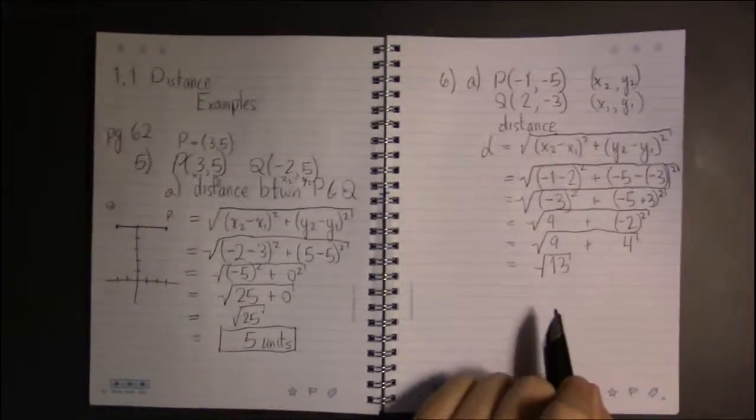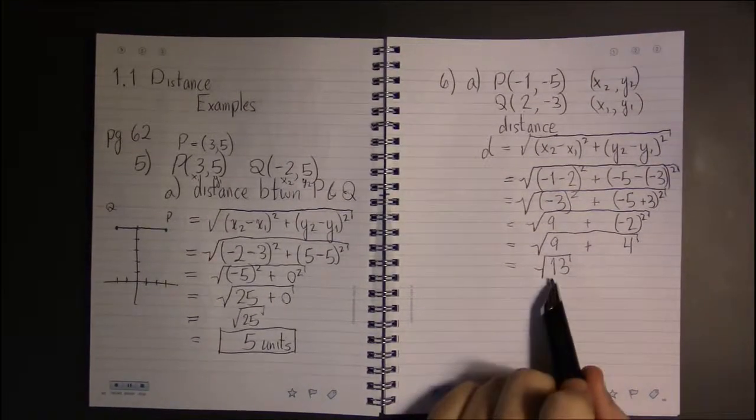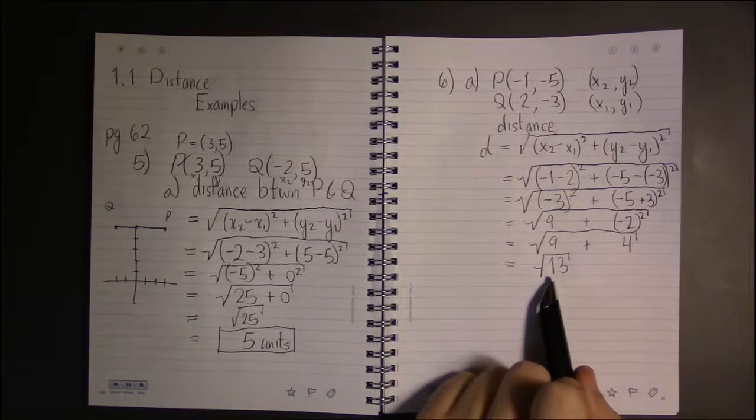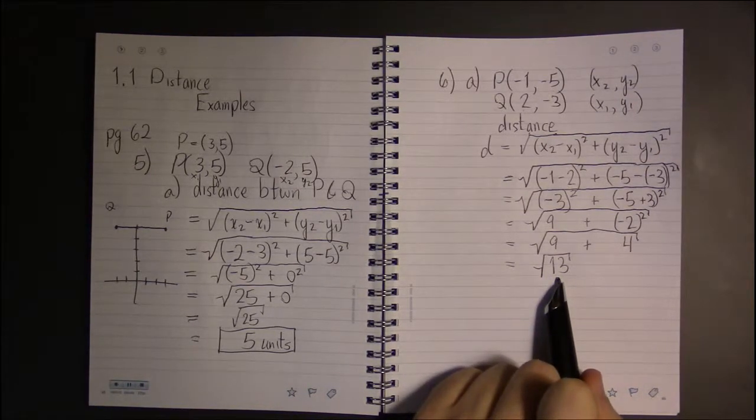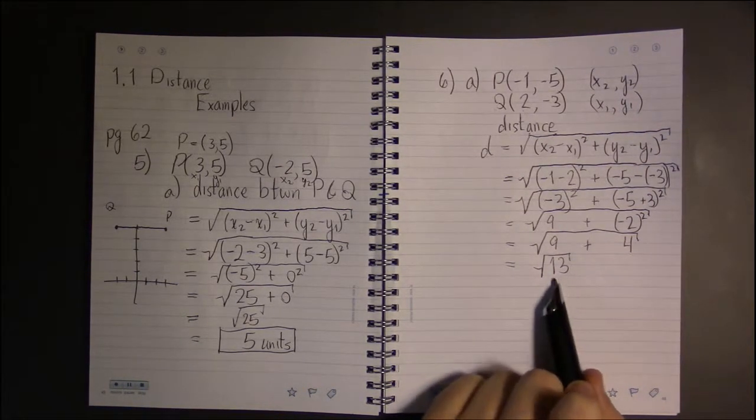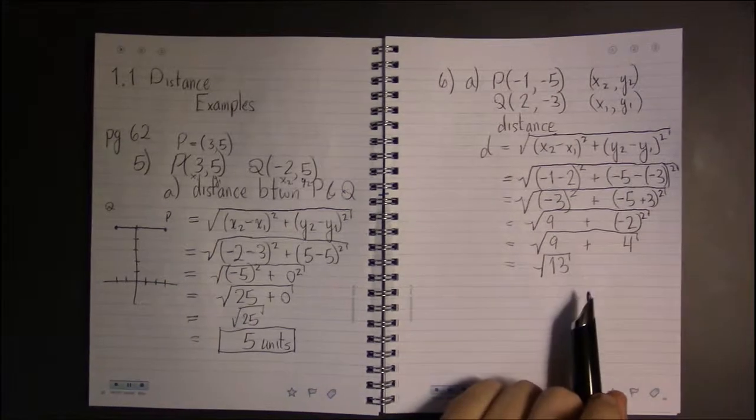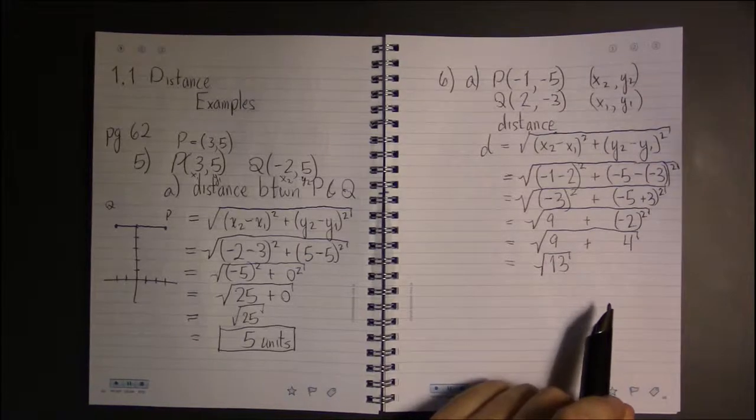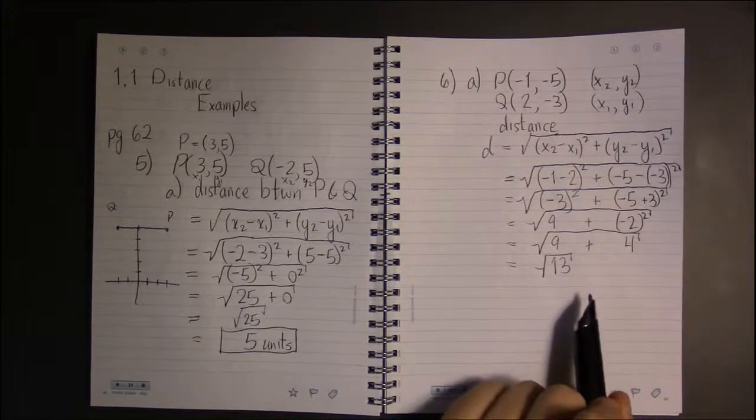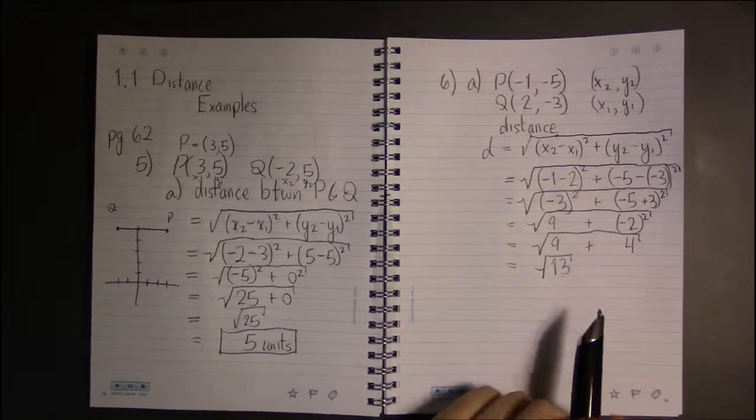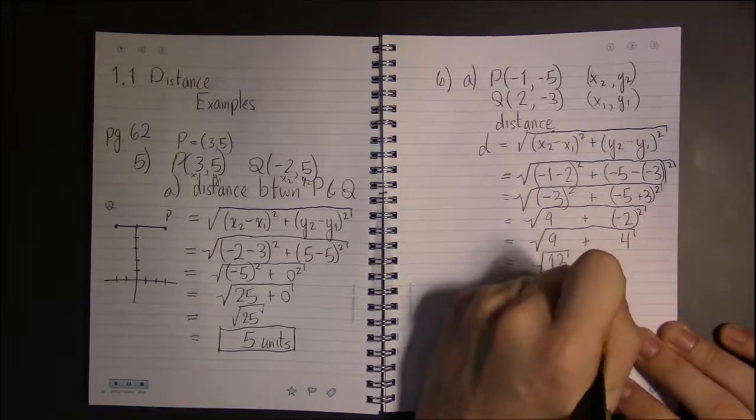If we think, is there a nice perfect square that goes into 13 if we can try to simplify this any further? The only thing that goes nicely into 13 is simply one and 13, so it's prime. There are no perfect squares that divide into 13, so if you want you can leave your answer as square root of 13 units.